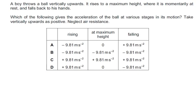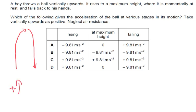A boy throws a ball vertically upwards; it rises to a maximum height where it's momentarily at rest, then falls back down. At each point in the journey, gravity is always acting downwards, so the ball always has a downward acceleration (taking upwards as positive, it's always negative). The answer is B.